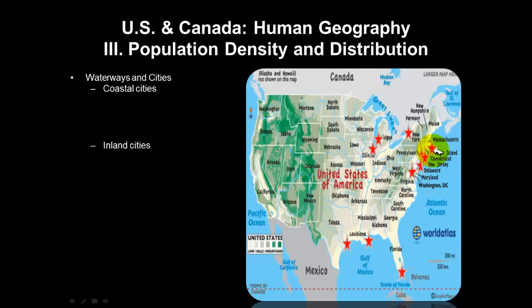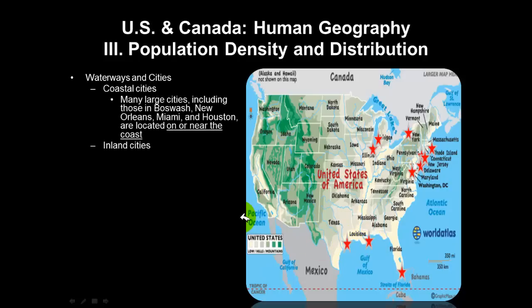Looking at the coastal cities of BosWash again — Boston, Hartford, New York, Philadelphia, Washington D.C., Baltimore — and also Florida with Miami, New Orleans in Louisiana, Houston in Texas — they're all located near the coast. That's important because early cities near coastlines had access to transportation, trade, and fertile soil, which is why so many major cities and commerce centers are located near water.